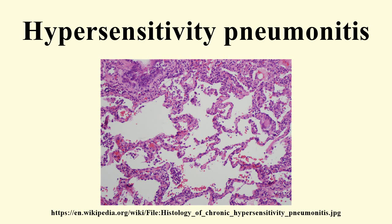On chest radiographs, progressive fibrotic changes with loss of lung volume particularly affect the upper lobes. Nodular or ground glass opacities are not present. Features of emphysema are found on chest films and CT scans. Chronic forms reveal additional findings of chronic interstitial inflammation and alveolar destruction associated with dense fibrosis. Cholesterol clefts or asteroid bodies are present within or outside granulomas. Many patients have hypoxemia at rest and all patients desaturate with exercise.